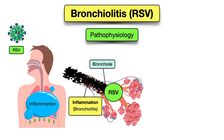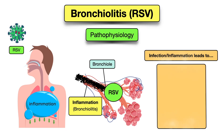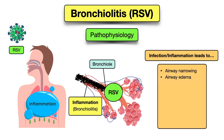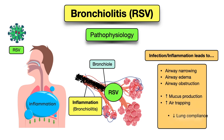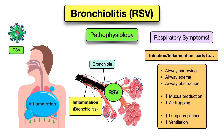Take a close look at all that inflammation in the bronchioles — you can see how it causes the airways to become narrow. There is edema or swelling present, along with airway obstruction, increased mucus production, and air trapping, leading to decreased lung compliance and ventilation. This is why you see all the respiratory symptoms in bronchiolitis.